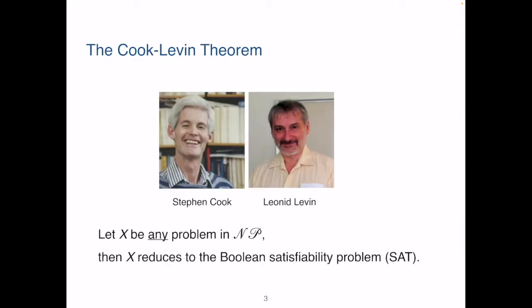Okay, so the grand reveal, the Cook-Levin theorem. The theorem was proposed by Stephen Cook and Leonid Levin independently and simultaneously, which also earned them a Turing award in 1982.